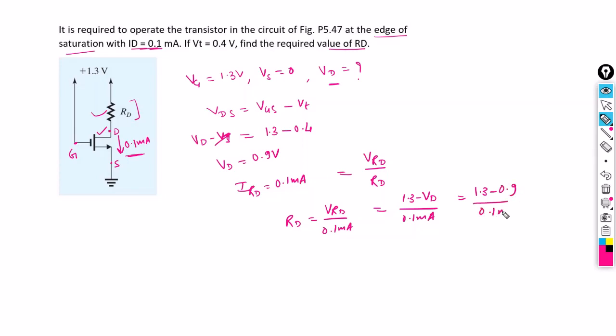So Rd is 0.4 divided by 0.1 milliamperes, which can be written as Rd is 4 kilo-ohms.